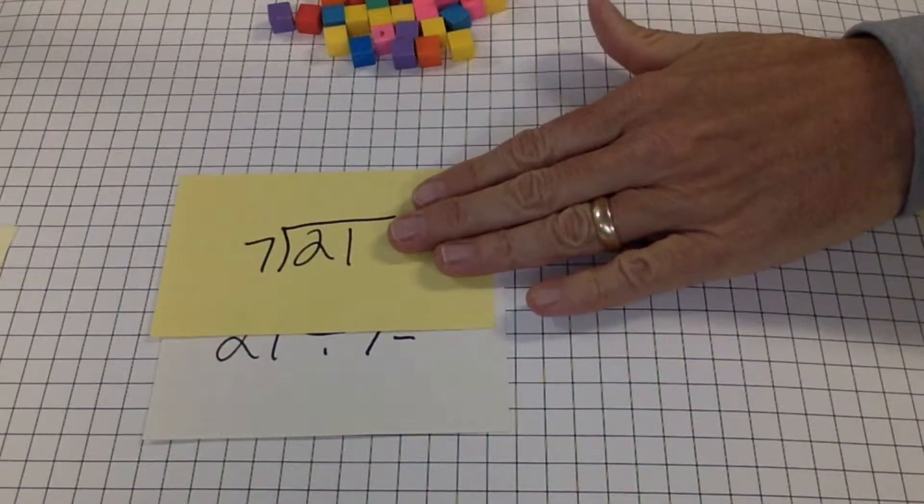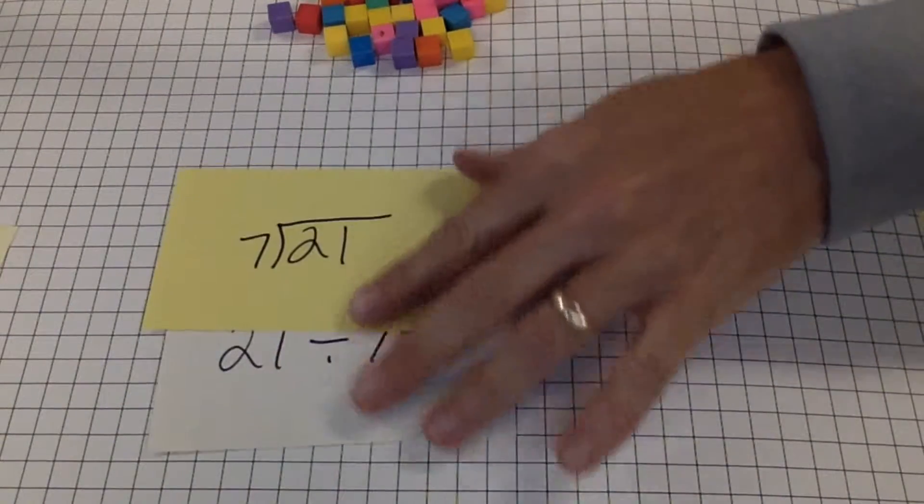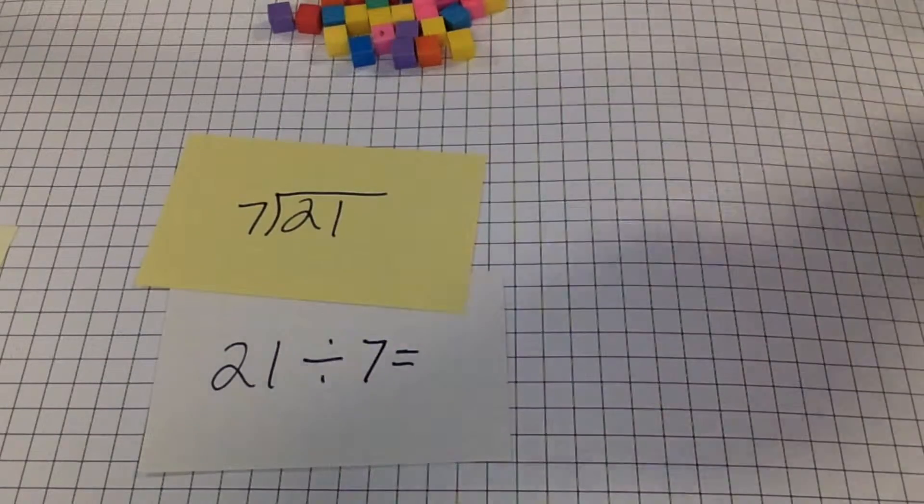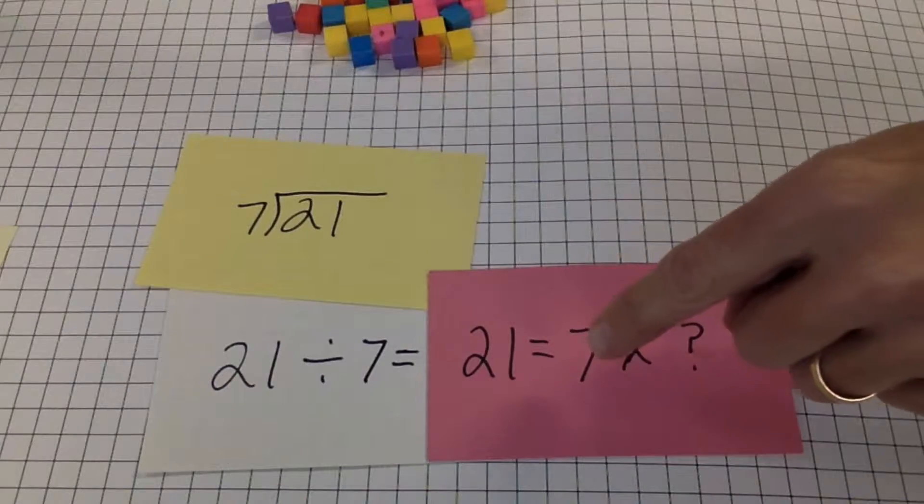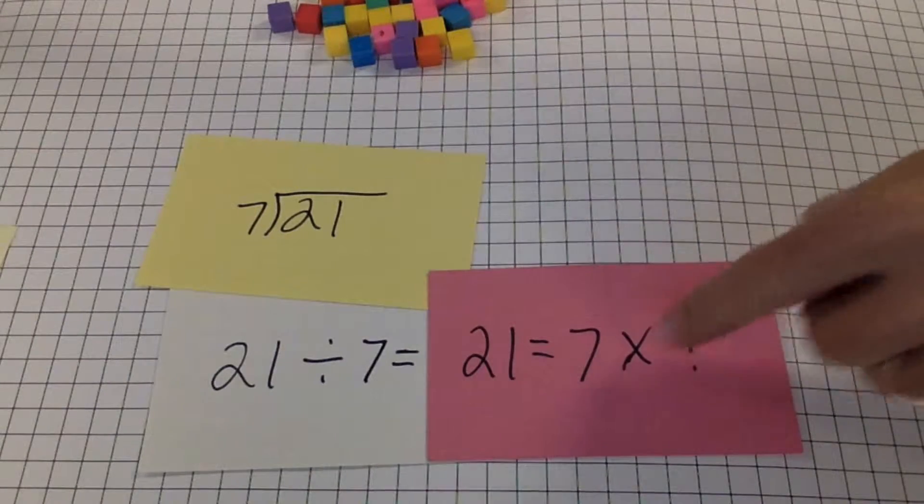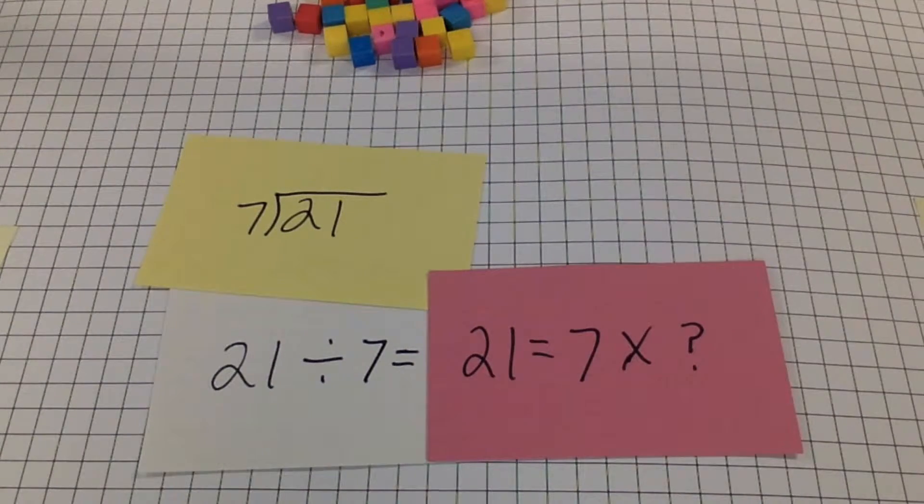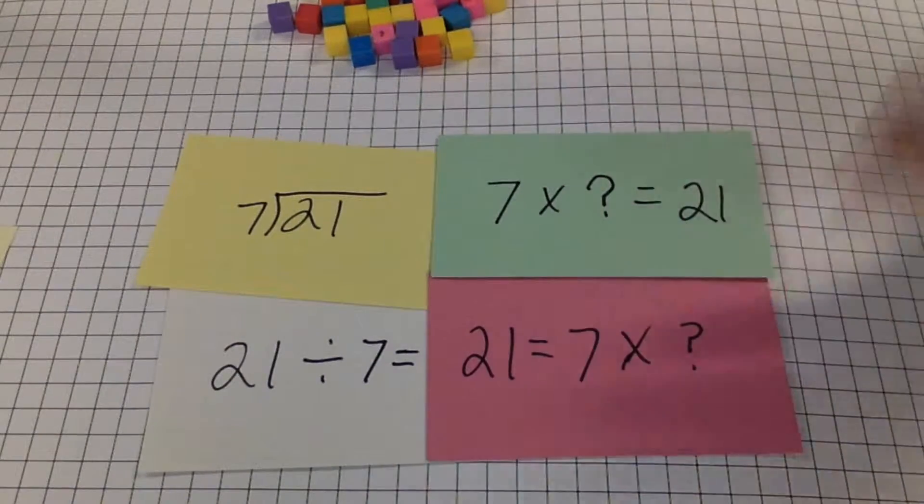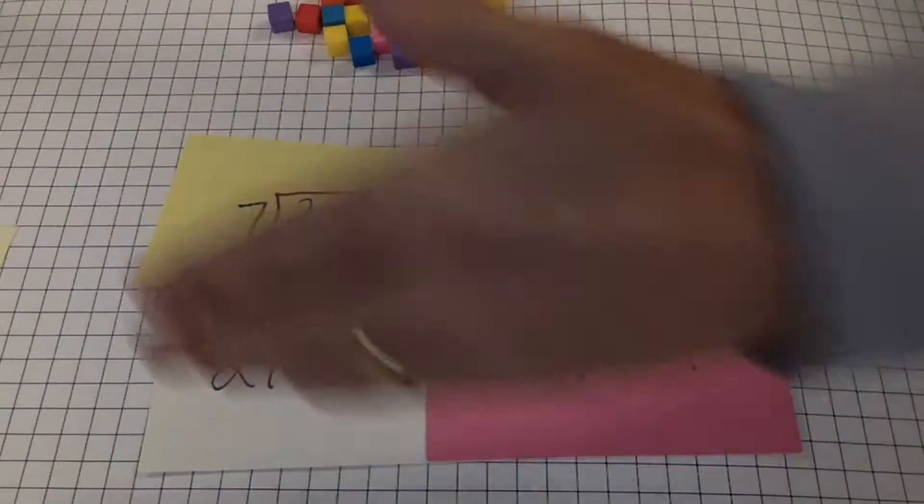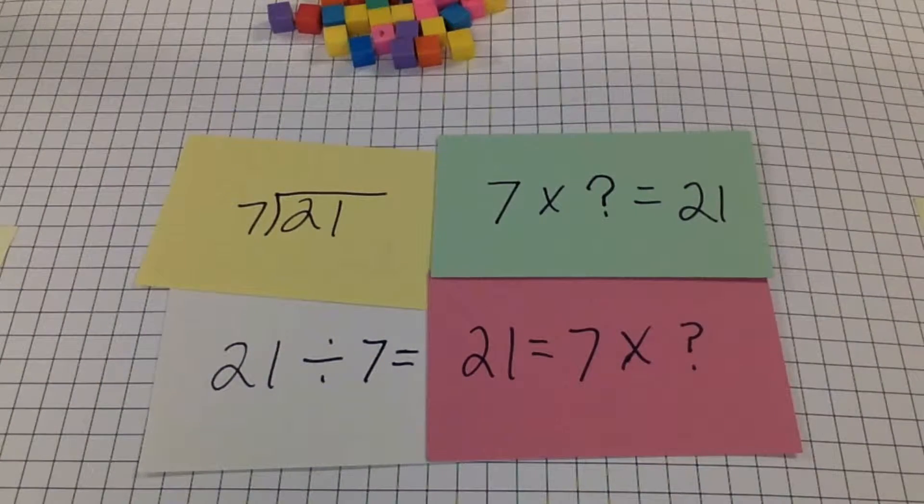This is the most common way we're going to be looking at them. But in addition to these two, you might think of that same problem as 21 divided by, 21 equals 7 times what number? Or you could flip that around, 7 times what number equals 21. All of these say 21 divided by 7 in a different way.